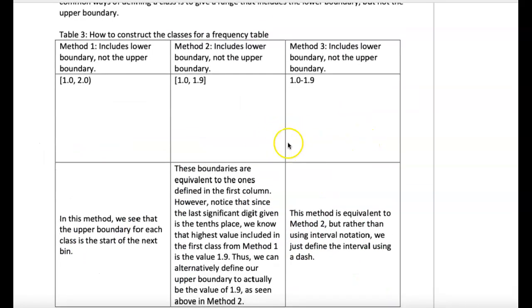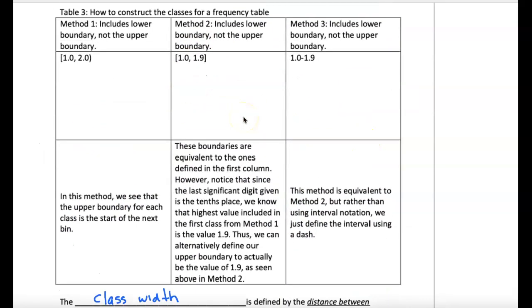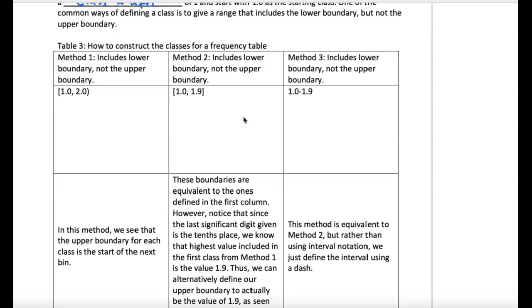Coming back to this table of how to construct your classes - how do you determine the boundaries? This is a technical place I want to make sure we review. When we describe those classes, the set of values, there are three ways we could do it, and you will see it three different ways. That's why it can get confusing, even though the idea is not confusing. How many GPAs are between 1.0 and 2.0? That's what that says here. I could also write it this way: 1.0 to 1.9.